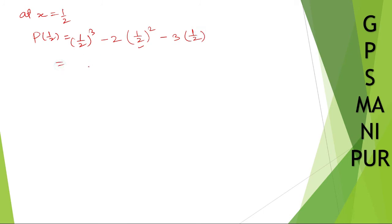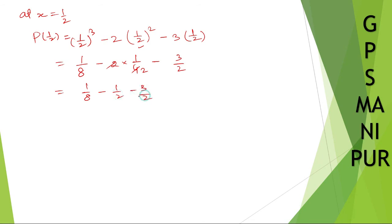1 by 2 whole cube will be 1 by 8. Minus 2 into 1 by 4. Minus 3 by 2. Taking the LCM, we get LCM as 8. So: 8 divided by 8 — 1 into 1 equals 1. Minus 2 into 4 gives minus 4 in numerator. Then minus 4 threes are 12, giving minus 12.